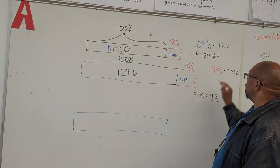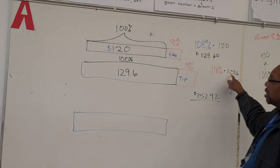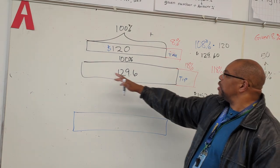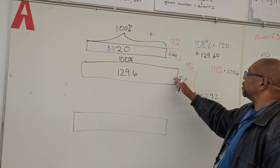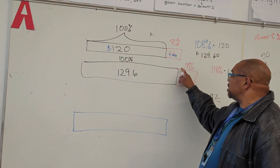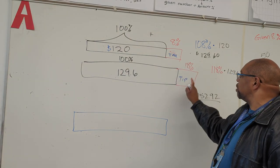Now you take the number that you see here, that becomes your new 100%. So this is your 100%. Now we're going to add the percent increase, 18%. That's this here, your tip.